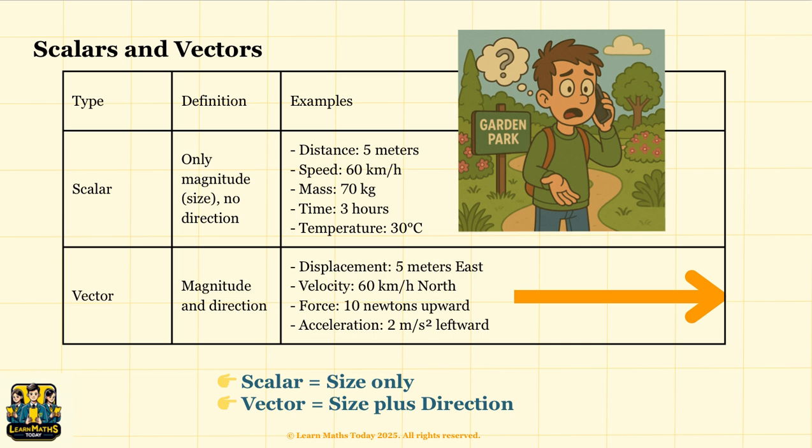A scalar only tells you how much. In other words, the magnitude. In this case, 100 meters is a scalar. It tells you the distance but not the direction. Scalars are all around us in our daily life. We have temperature in degrees Celsius, speed in km per hour, mass in kg, and time in hours. Just a number, they don't tell you which way anything is happening.